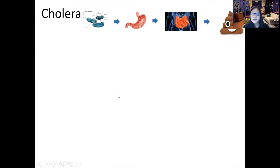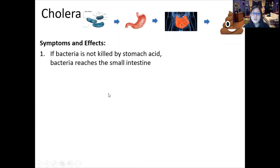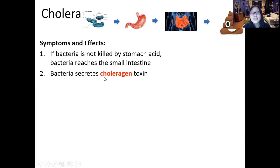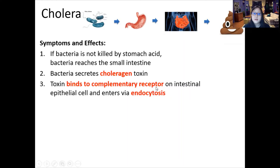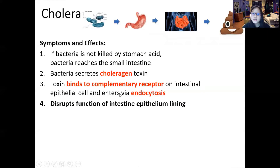What happens when cholera is in you — when you drink or eat contaminated food or water? Usually the bacteria is killed by stomach acid, but some will reach the small intestine. The bacteria secretes cholerogen toxin, and cholerogen toxin is the real bad guy here. It binds to complementary receptors and enters the cell via endocytosis into intestinal epithelial cells — the cells lining your intestines.